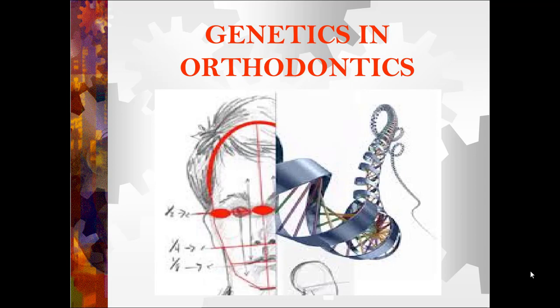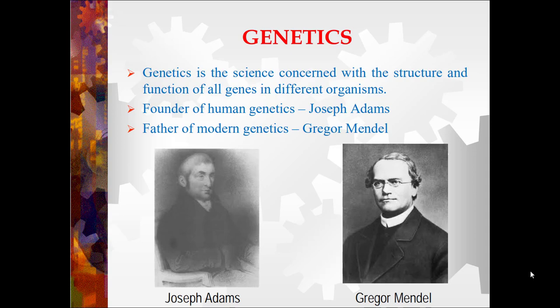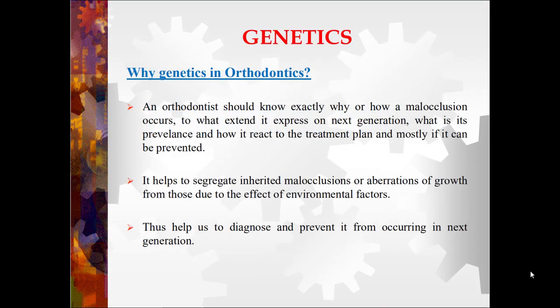The next topic is genetics and orthodontics. Genetics is a science concerned with the structure and function of all genes in different organisms. The founder of human genetics is Joseph Adams and the father of modern genetics is Gregor Mendel. Genetics is required in orthodontics because growth, development, and function of oral and facial structures depend on genes. An orthodontist should know why or how a malocclusion occurs, to what extent it is expressed in the next generation, its prevalence, how it reacts to treatment, and whether it can be prevented. It helps to segregate inherited malocclusions from those due to environmental factors, thus helping diagnose and prevent them in the next generation.